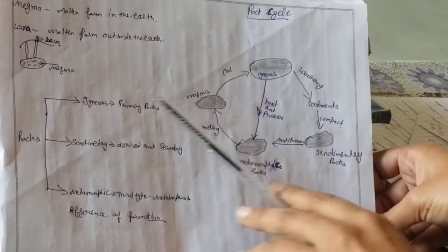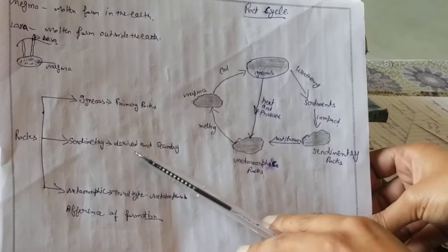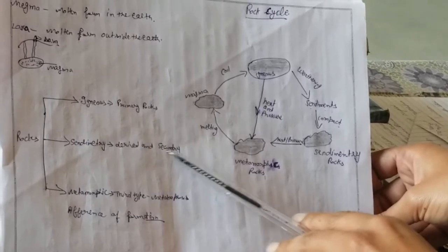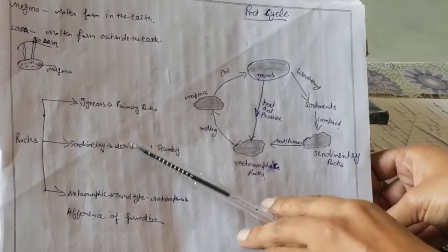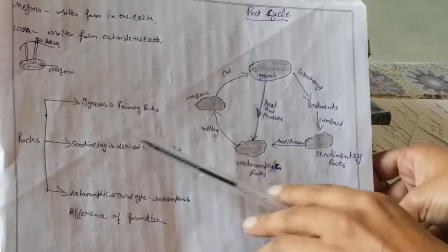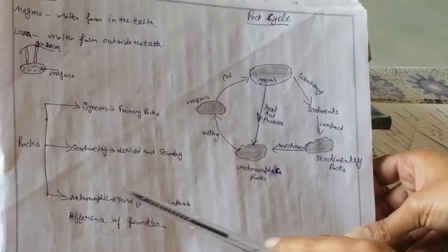Next are sedimentary rocks. These rocks are derived because they are formed from igneous rocks. That's why they are called sedimentary rocks.